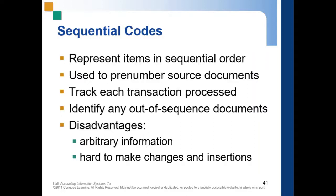Sequential codes are used, for instance, in checks. Checks have check numbers that are already in sequence — for example, a checkbook numbered from 001 to 050. If you encounter an error, say on check number 10, you cannot change it; it will be recognized as a cancelled check. So you need to be aware of where each document goes.